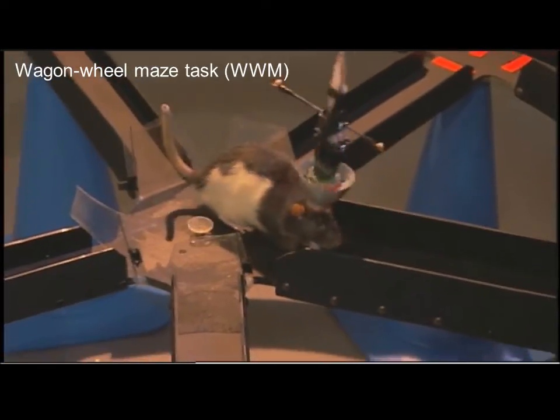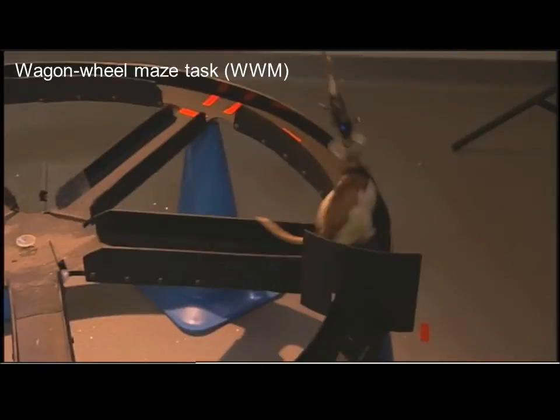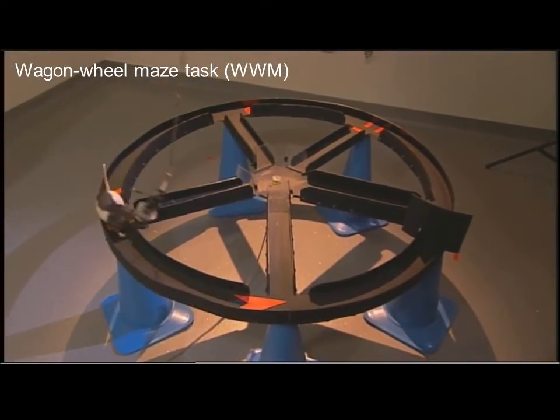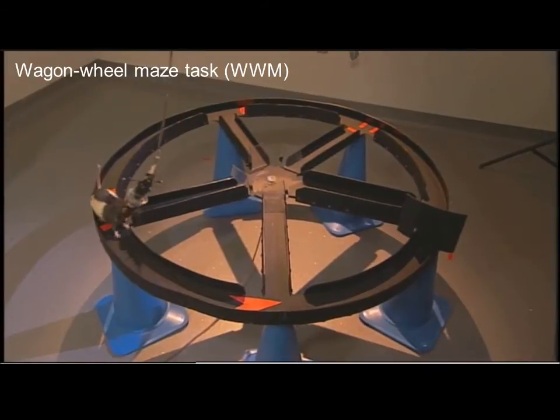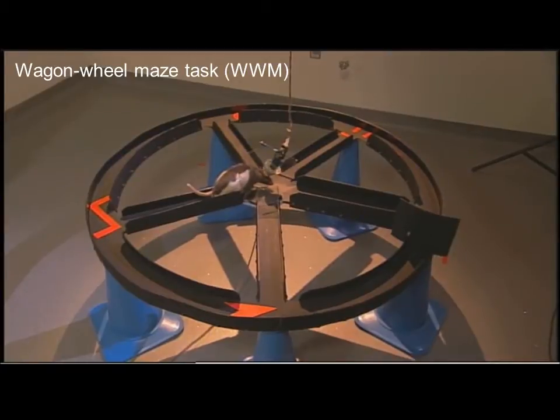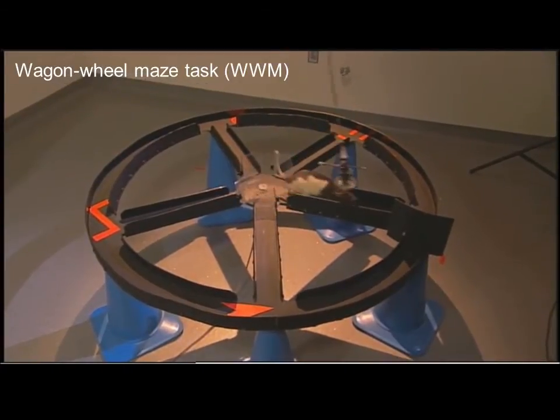In order to investigate whether distinct frequencies of theta carry contextual information from its storage place in hippocampus to cortical regions regulating decision-making, we rewarded rats for choosing sequentially from four distinct trajectories, each marked by a configuration of spatial cues.